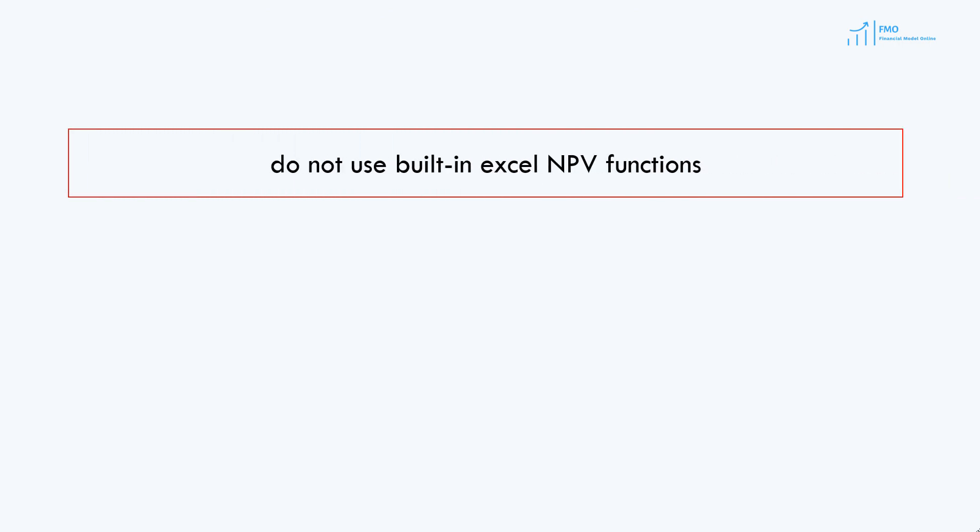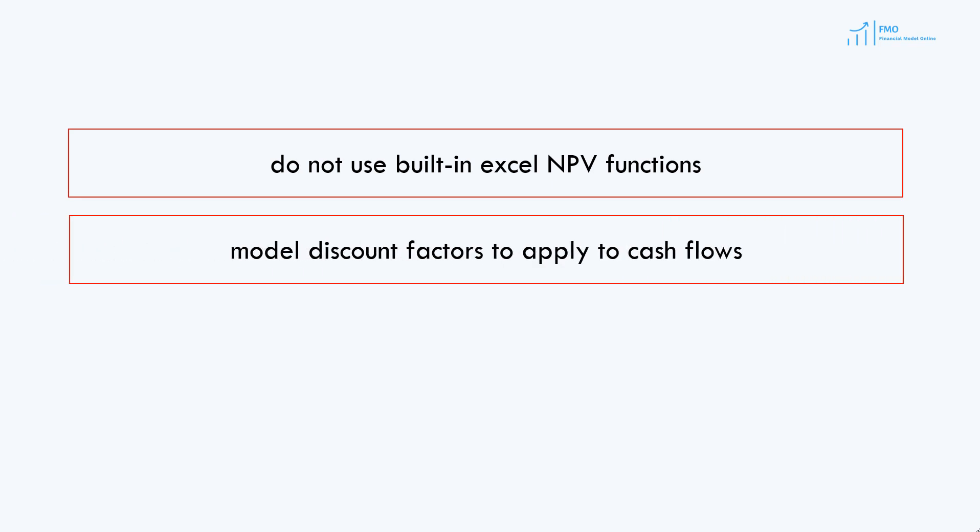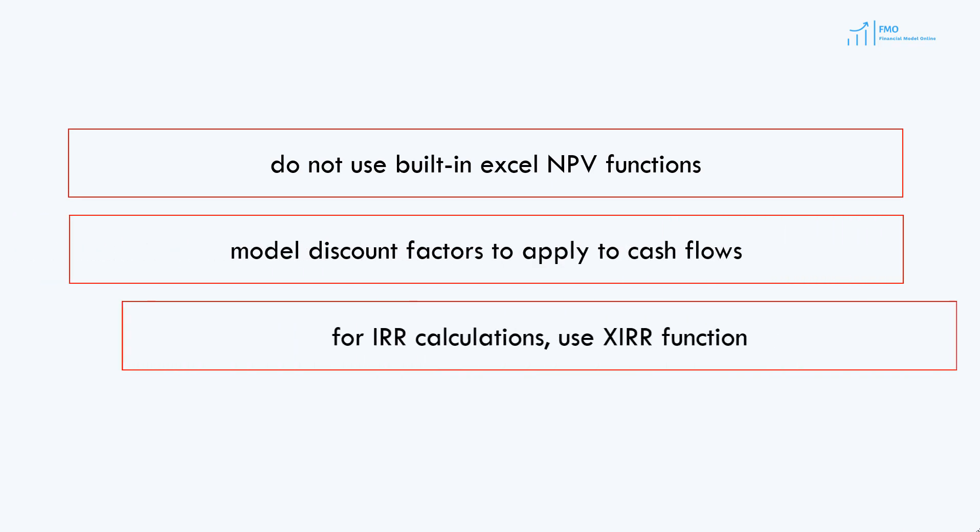Typically in financial models, we do not use the built-in Excel NPV function. The NPV function yields periodic values — meaning if your cash flows are monthly, it will give you a monthly NPV, which does not make sense. NPV should always be annualized. Additionally, the NPV function does not take into account the valuation date. Instead of using the NPV function, we usually model it out based on discount factors. For IRR calculations, we use the XIRR function in Excel.